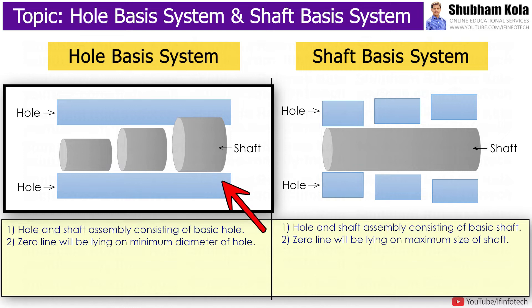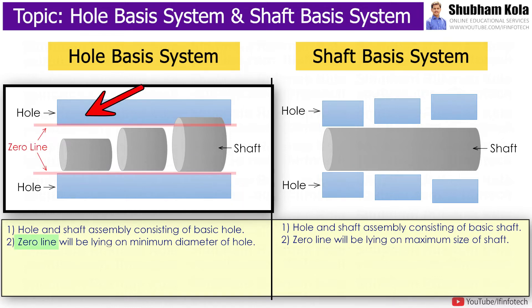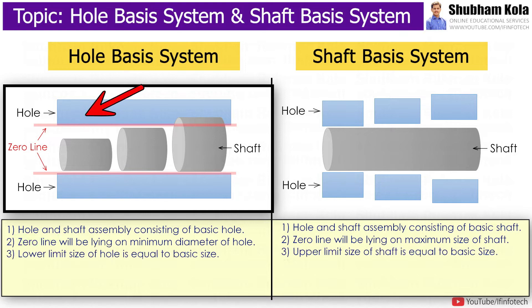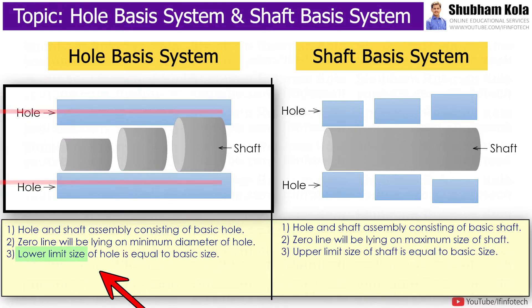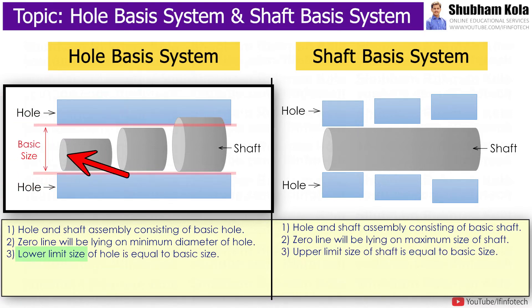It means for a hole and shaft assembly, the zero line will be laying on the minimum diameter of the hole. For this system, the lower limit of hole is equal to basic size.